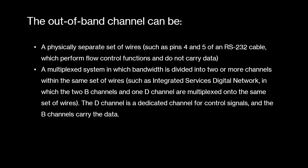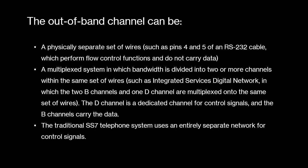The D-channel is a dedicated channel for control signals, and the B-channels carry the data. The traditional SS7 telephone system uses an entirely separate network for control signals.